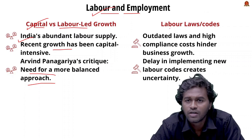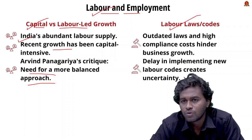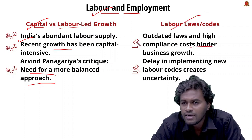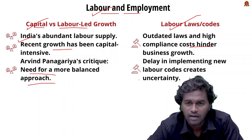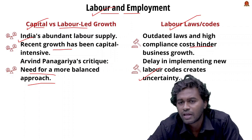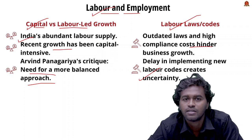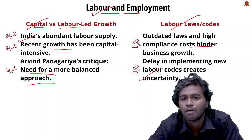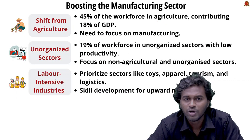The second problem is outdated labor laws. Outdated labor laws hinder the business growth environment, and the delay in implementation of the new labor code passed by Parliament creates uncertainty among investors. These are the major problems faced in labor and employment in the context of India's economic growth.